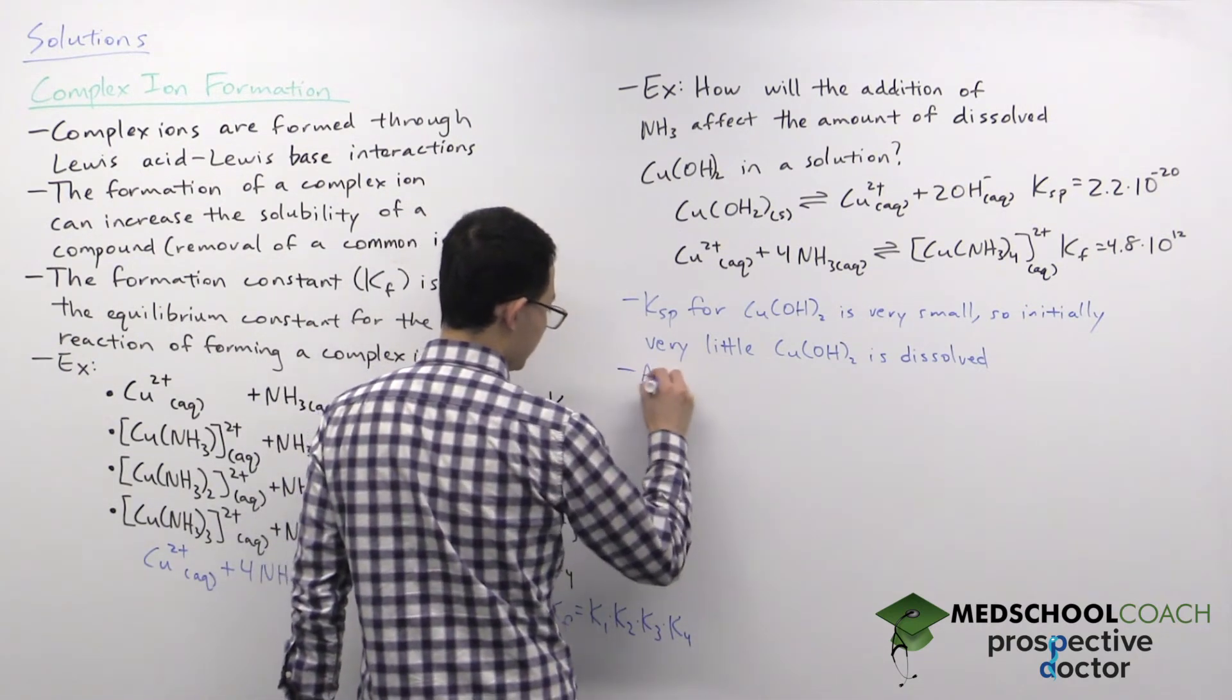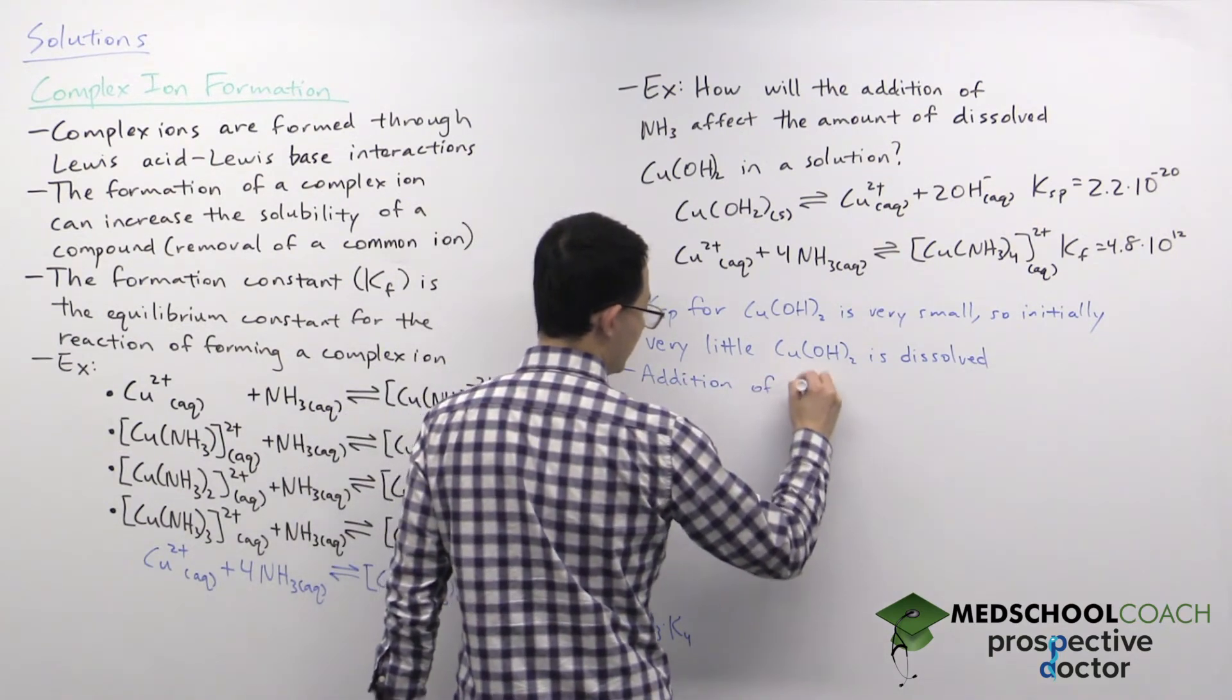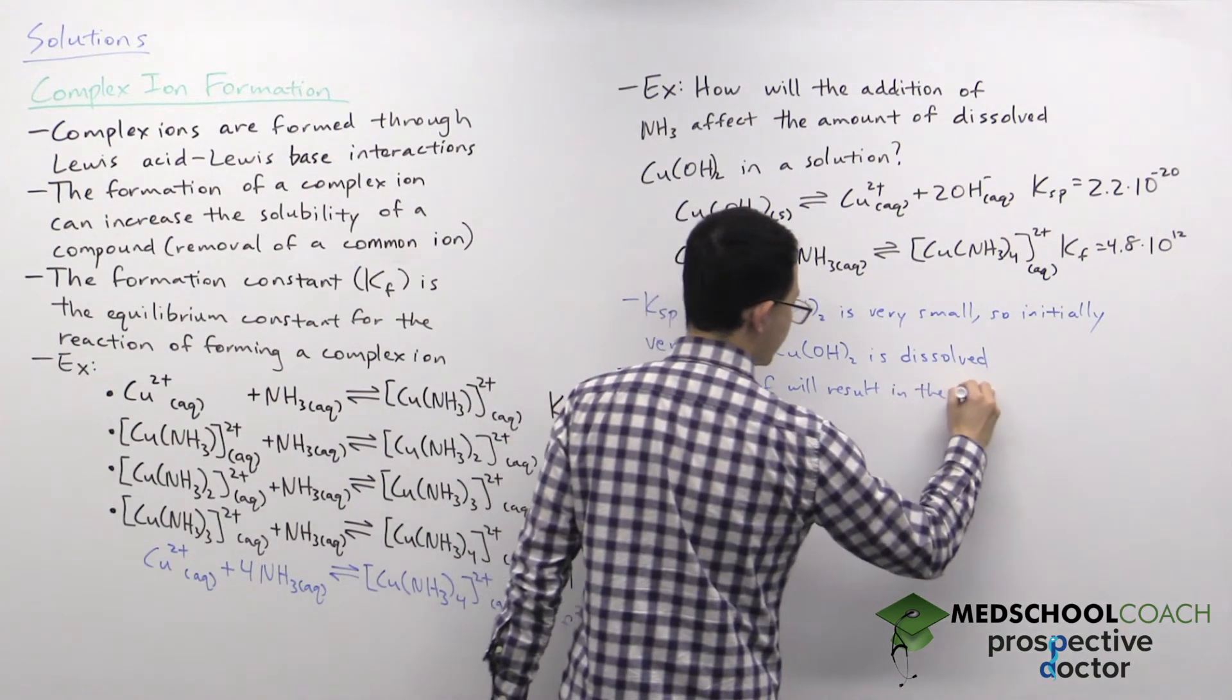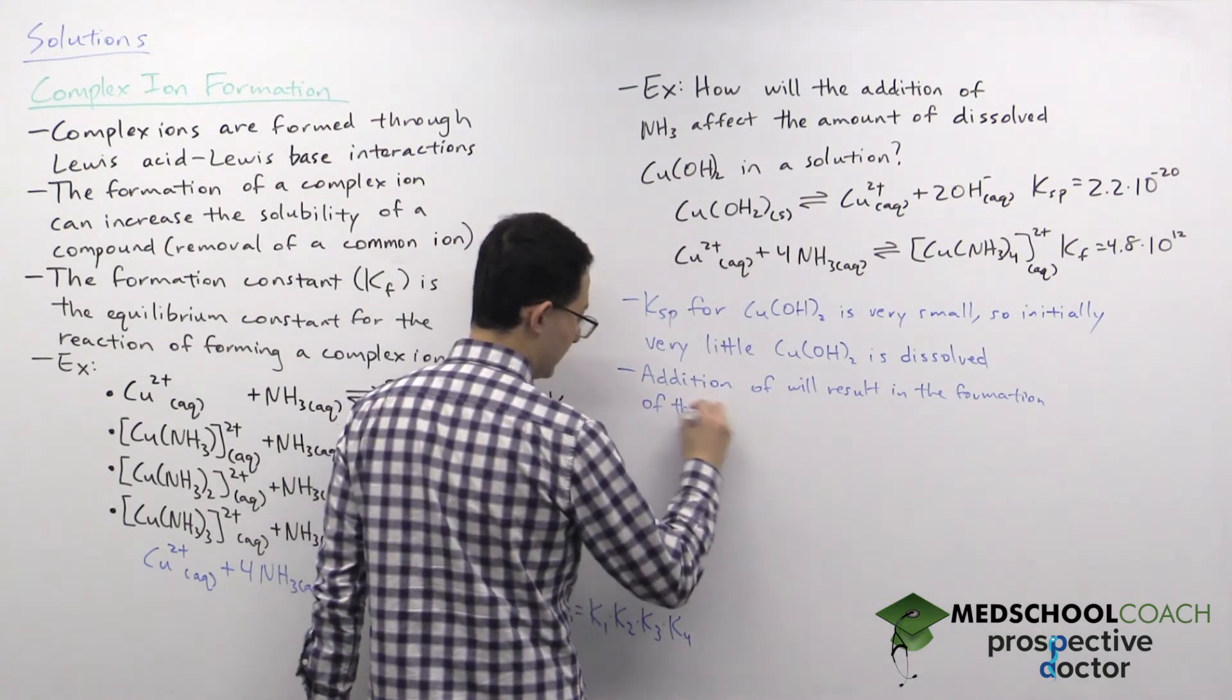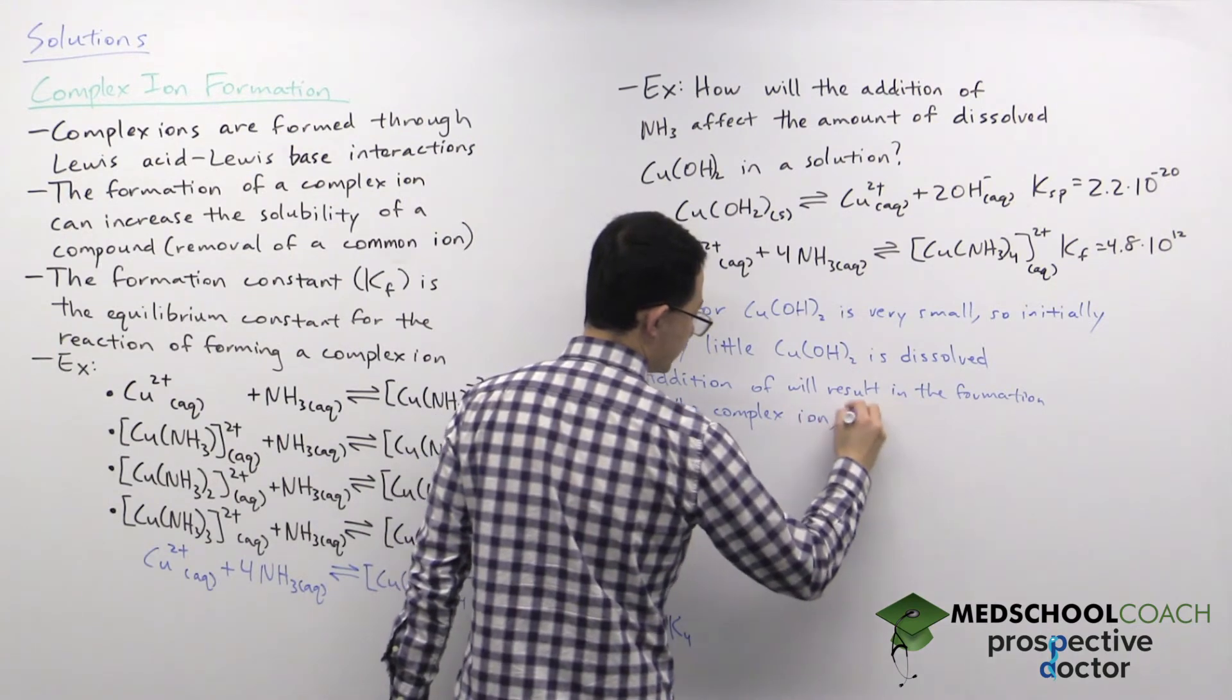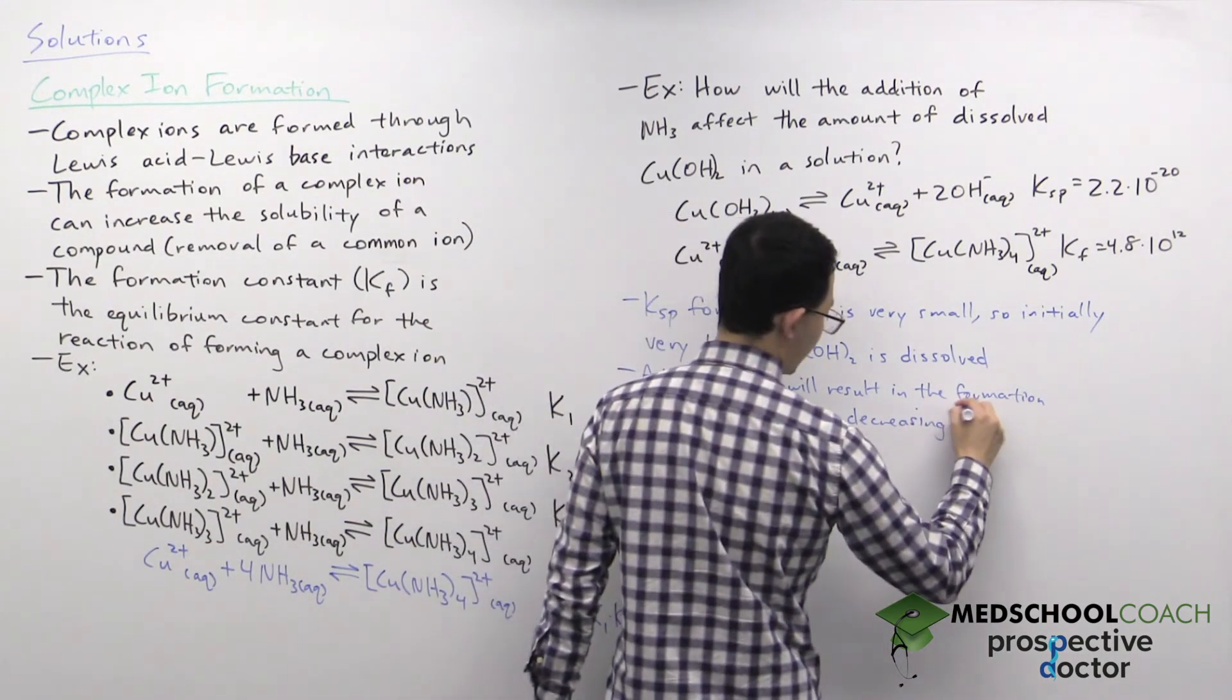And when it forms the complex ion it's going to decrease the concentration of copper cations in solution. So addition of ammonia will result in the formation of the complex ion decreasing the concentration of copper cation in solution.